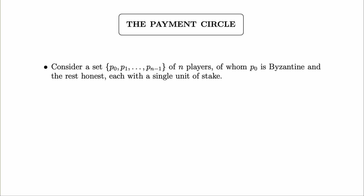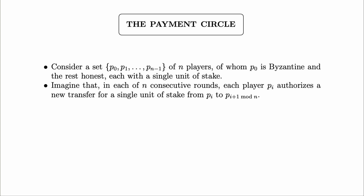I'll consider the example of what I call the payment circle. We consider a set of n players p0 up to p(n-1). Player p0 is Byzantine and the rest are honest, each with a single unit of stake. So we start in a situation where the adversary controls 1/n of the total stake. In each of n consecutive rounds, each player pi authorizes a transfer of a single unit of stake from pi to p(i+1) mod n — the stake is just passed around the circle, so everybody still ends up with one unit of stake.